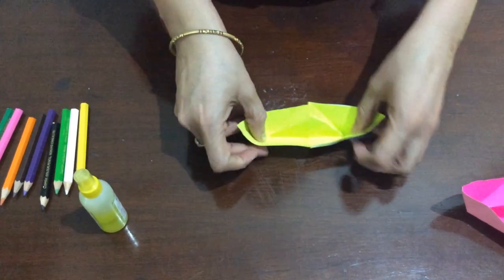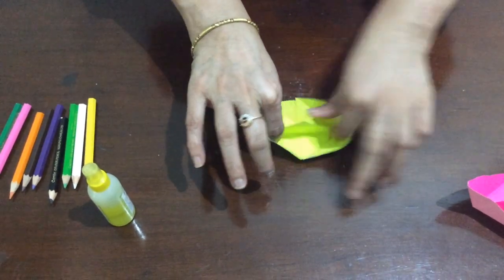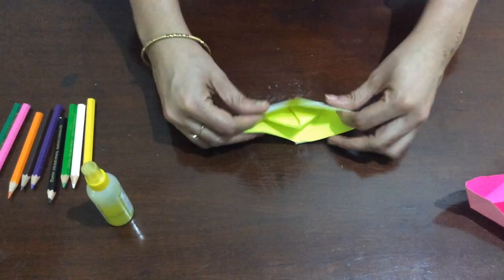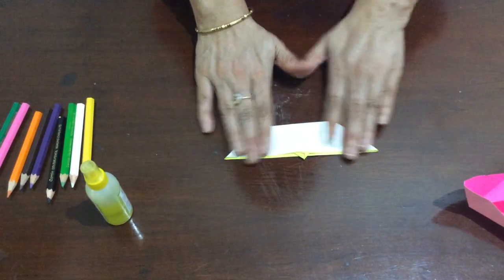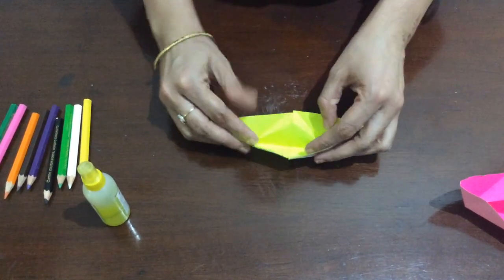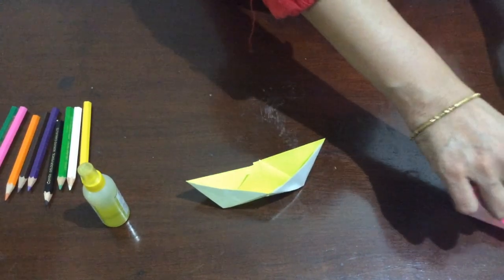So in this way you can make a boat. Children enjoy floating boats in water when the monsoons are there. It is an activity which is thoroughly enjoyed by the children.